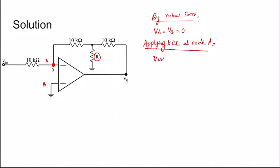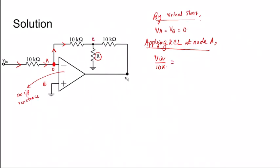This is Vin and VA is 0. Vin divided by 10K, so this current is like this. Since this is ideal op-amp, it has infinite input resistance, so no current can enter into this. All current coming in this node will go like this. Vin minus 0 by 10K equals, let this point be C, so 0 minus VC by 10K.